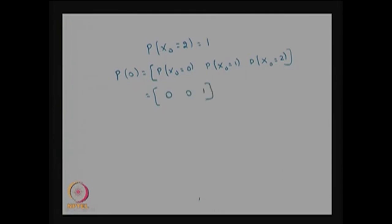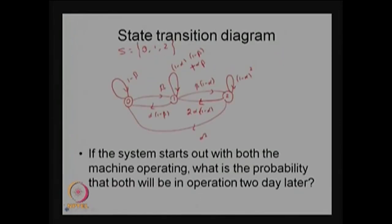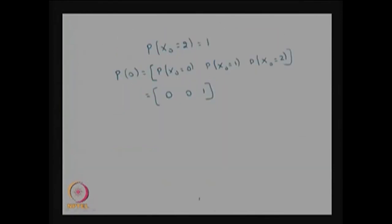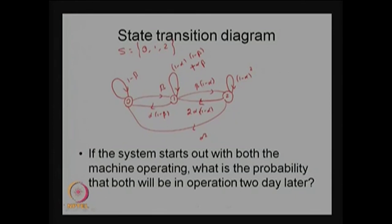The question is: what is the probability that both machines will be in operation two days later? We convert this to: what is the probability that X2 = 2 given that X0 = 2? This is a conditional probability where the system starts with both machines running.